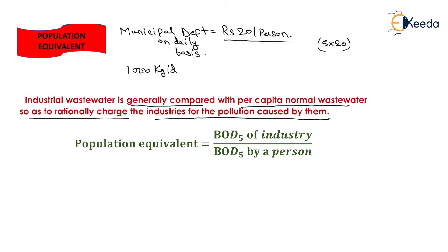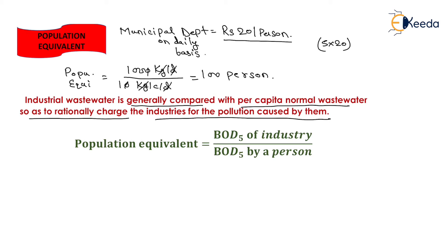Population equivalent is the ratio of total waste produced by the industry in kg per day divided by the waste produced by one person in one day in kg per capita per day. Suppose a person produces 10 kg per day, then population equivalent = 1000 ÷ 10 = 100. The units of kg and day cancel out, meaning the total waste equals that of 100 persons. Multiplying by the unit rate of rupees 20 per person, we charge the industry rupees 2000.